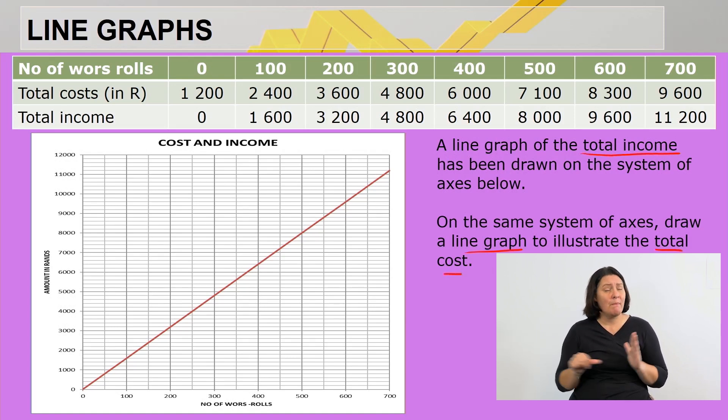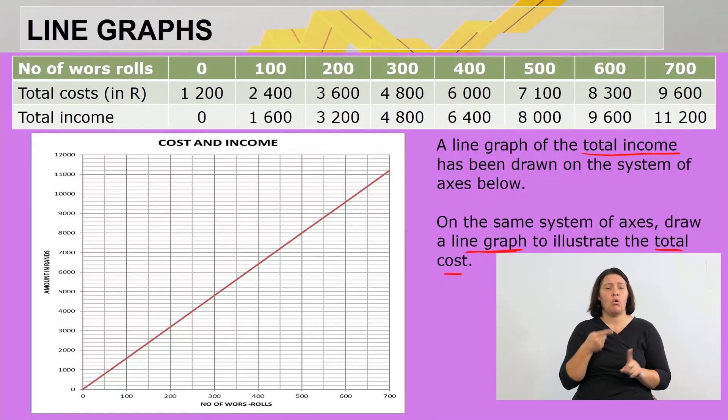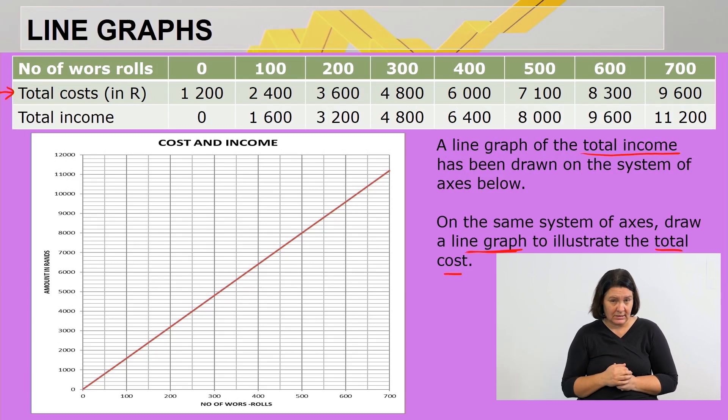It's very important to understand what the question is all about. The total income has been drawn. What is your aim now? On the same set of axes we have to draw a line graph to illustrate the total cost. We're going to work with the top one, the total cost. We already have a heading provided and the axes are labeled. That's your dependent y-axis and your independent x-axis.